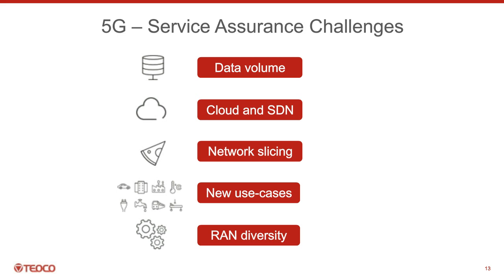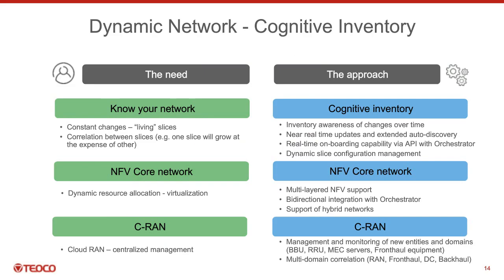Let's deep dive into the main challenges of contextual service assurance. The network is going to be very dynamic — we will have a bunch of slices even under one specific cell site. A connected car, for example, can be a tenant of a V2V URLLC slice but also a tenant of an eMBB slice for the use case of a car as a mobile hotspot. You might have multiple tenants on different slices competing over the same resources, or situations where one or more need to scale out at the expense of others. All this dynamicity requires a cognitive inventory.